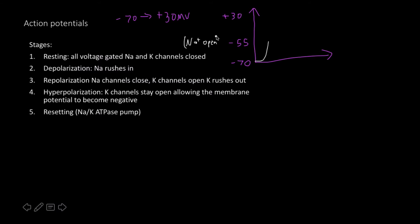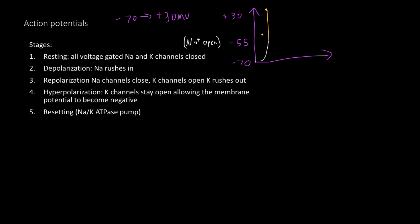At negative 55 millivolts, all sodium channels open. Sodium rushes in, causing a massive spike straight up to positive 30 millivolts — a massive jump in membrane voltage. That's the depolarization phase of the action potential.